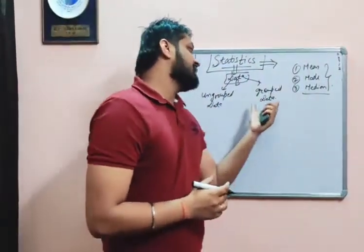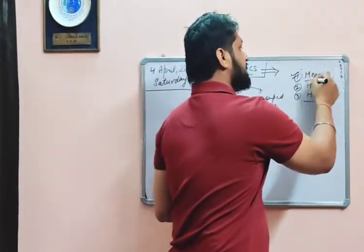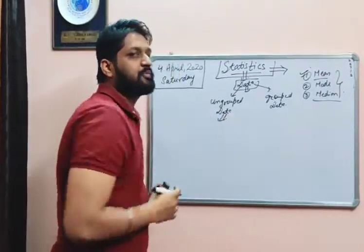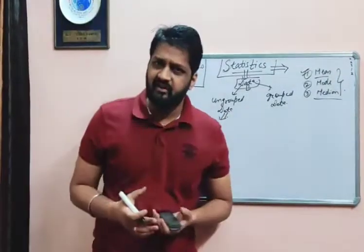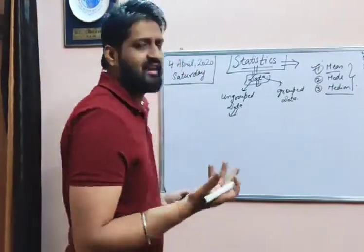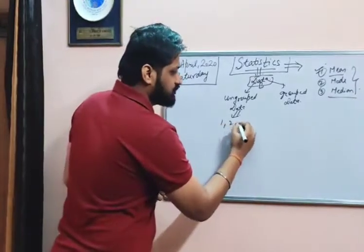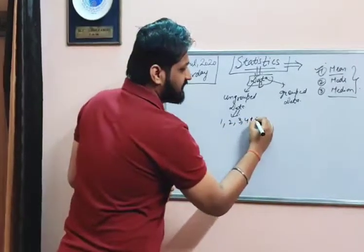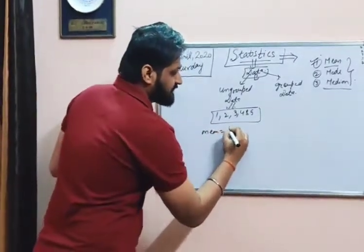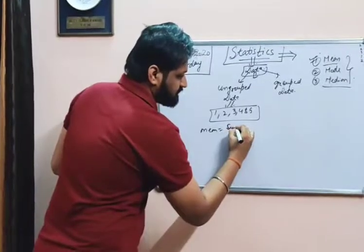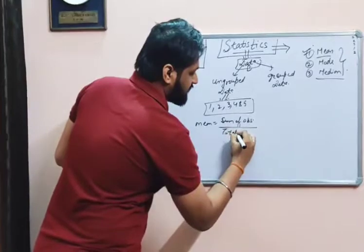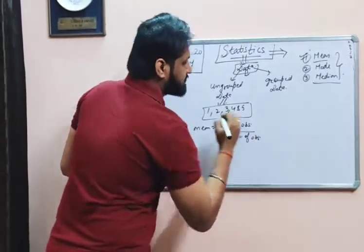So now, for ungrouped data and grouped data, the first term is mean. What is mean and how can we find mean? Let's take the example of ungrouped data. Ungrouped data means we don't have groups — we collect the information individually. For example, we have five observations: 1, 2, 3, 4, and 5, and we have to find the mean of these observations. The mean is basically the sum of observations divided by the total number of observations.